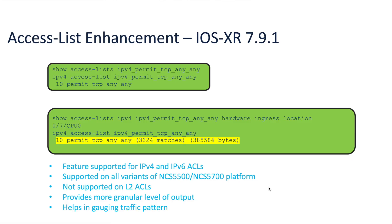After routing protocol enhancements, let us discuss some of the enhancements around data plane security. With IOS XR 7.9.1, we can display counter values in bytes in addition to packets when it comes to access lists. The use case of this feature is that it helps in gauging the traffic pattern at a more granular level in comparison with just packet match. This feature is supported across the entire NCS 5500 and 5700 portfolio.